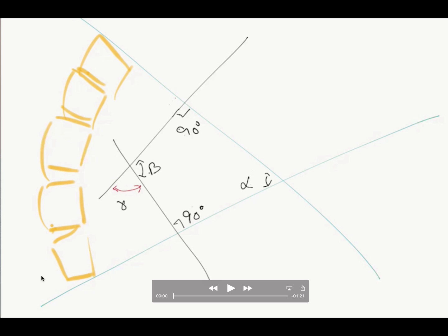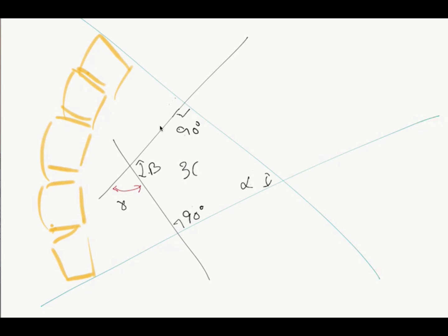What we want to measure is the curvature of the spine, which is alpha. By drawing these lines we have created a quadrilateral. We know the internal angles of a quadrilateral sum to 360 degrees. We also know that two of the angles are each 90 degrees, so alpha and beta together must make up the remaining 180 degrees.